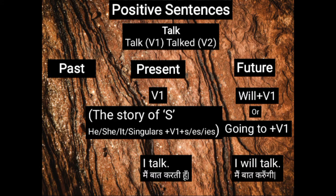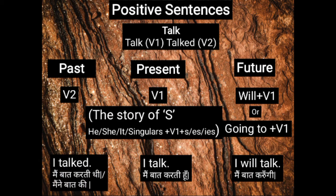For example, I WILL TALK. In the past, we use V2 — that is the past form of any verb. For example, I TALKED, which means MAIN BAAT KARTHI THI. AUR MAINNE BAAT KEY — there are two meanings of the same sentence in Hindi.